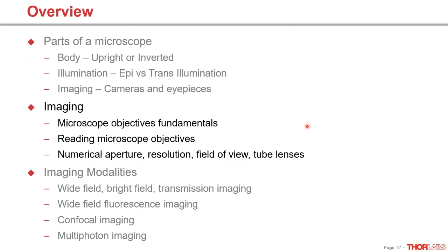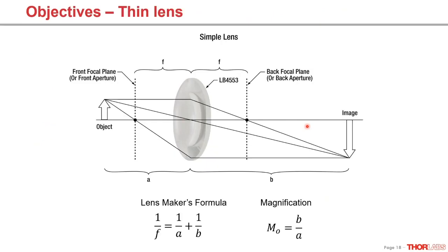Now we'll cover a lot of territory — the core of many questions we get. This includes reading microscope objectives and understanding what all those numbers mean, as well as key concepts such as numerical aperture, resolution, field of view, and tube lenses. A long time ago, simple microscopes were essentially a magnifying glass — a single bi-convex lens with curvature on both sides, with a defined focal length in front and behind. Using the lens maker's formula, 1/F = 1/A + 1/B, we can calculate where an object at distance A is relayed to at distance B. Magnification is simply B/A.